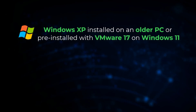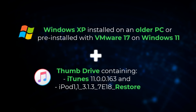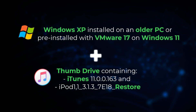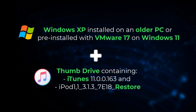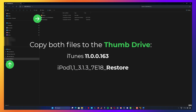To begin, you'll need either a PC running Windows XP or a virtual machine with Windows XP pre-installed. You'll need a thumb drive containing two critical files: an older version of iTunes and the iPod firmware file for restoration. Since I can't provide direct links, you'll need to search for them on Google — you should be able to find reliable sources. Copy both files to your thumb drive, then start Windows XP in the virtual machine.